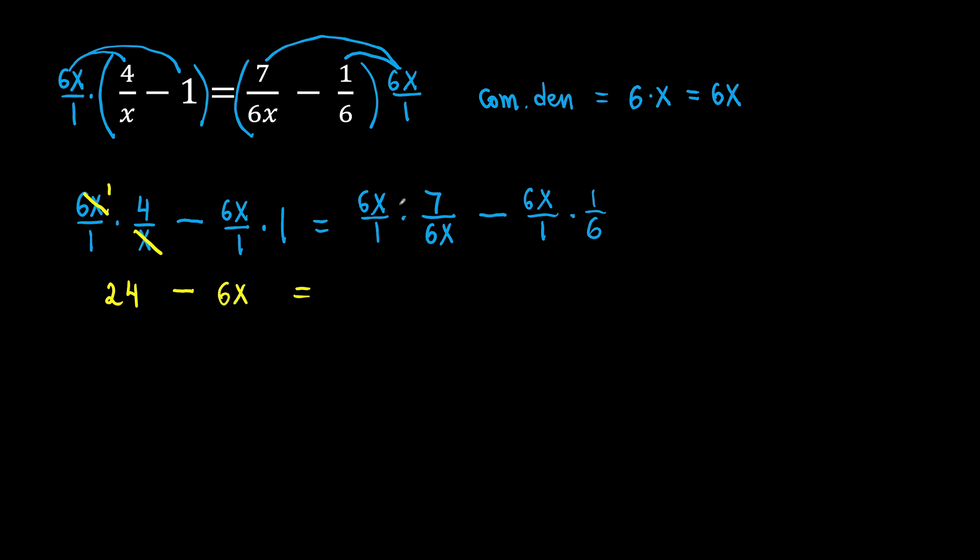On the right, look. 6x divided by 6x is 1. So 6x will cancel out. What do we have left? 1 times 7 is 7. Minus. Look, 6 and 6 will cancel out. So 6 divided by 6 is 1. What do we have left? x times 1 is x. Look, we got rid of all these denominators by using a common denominator 6x.